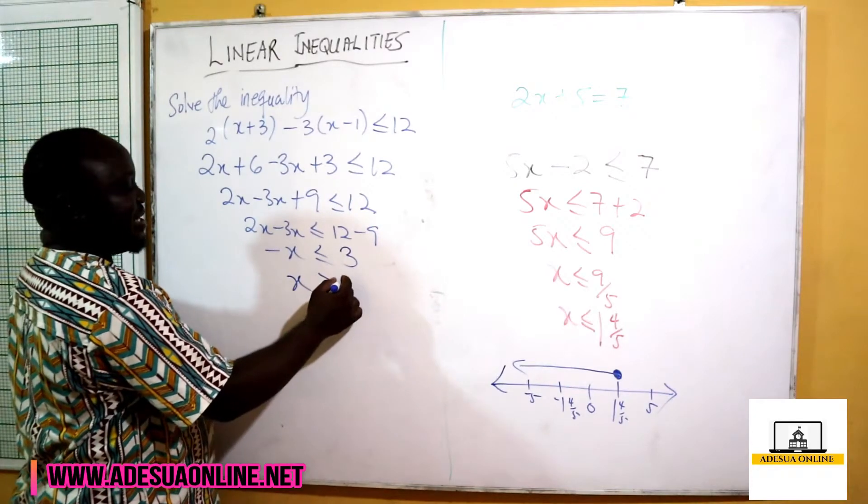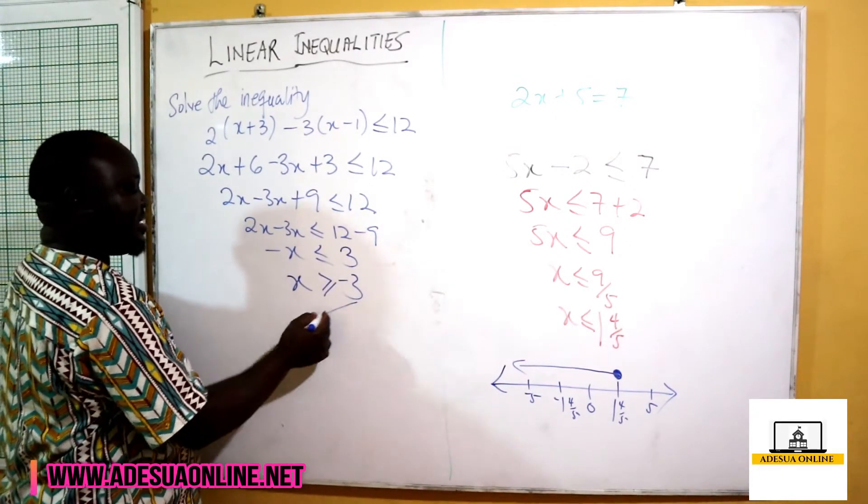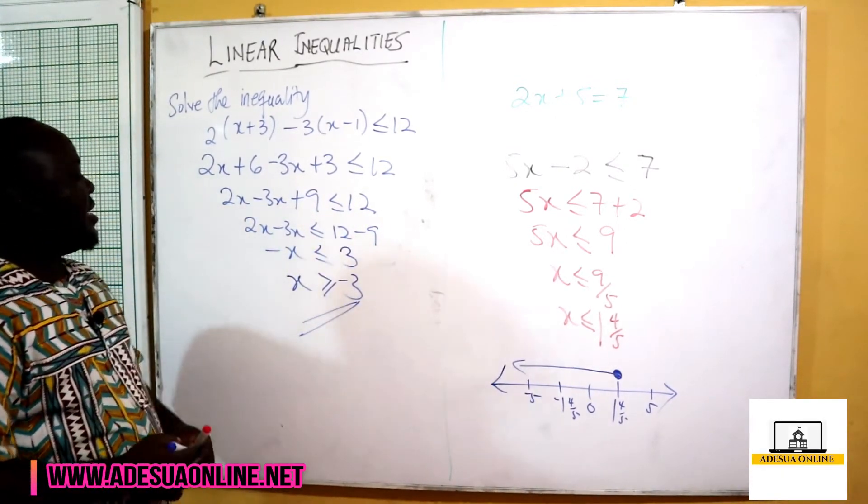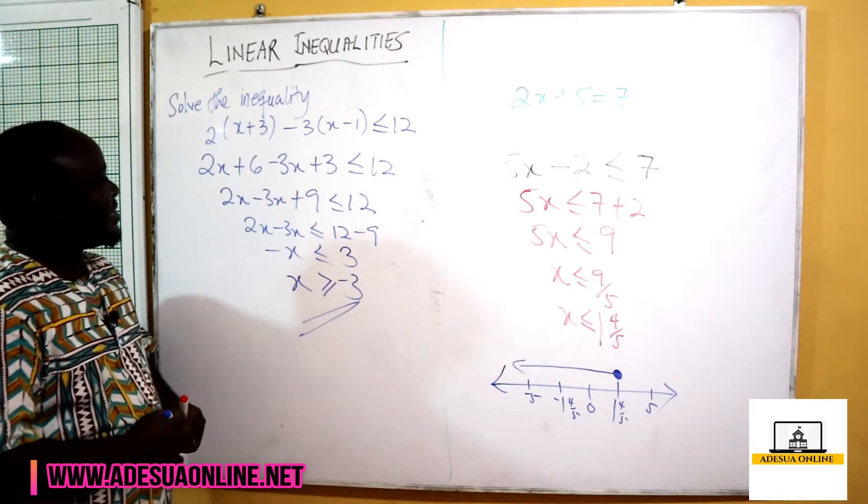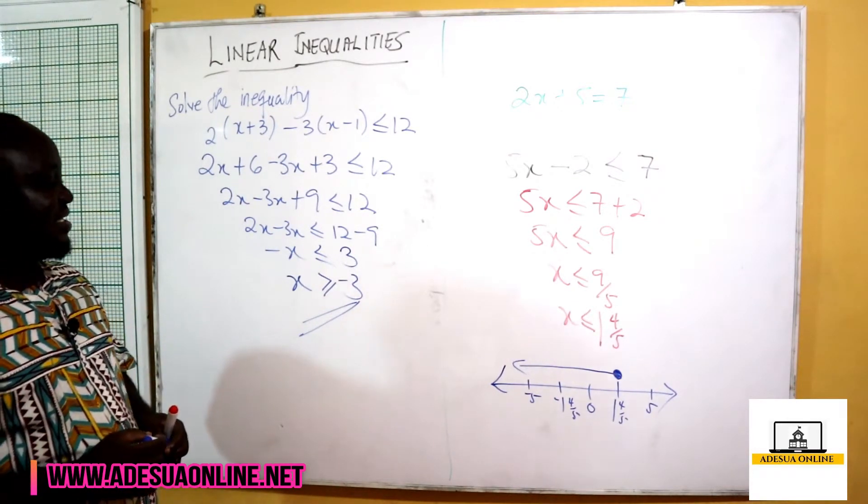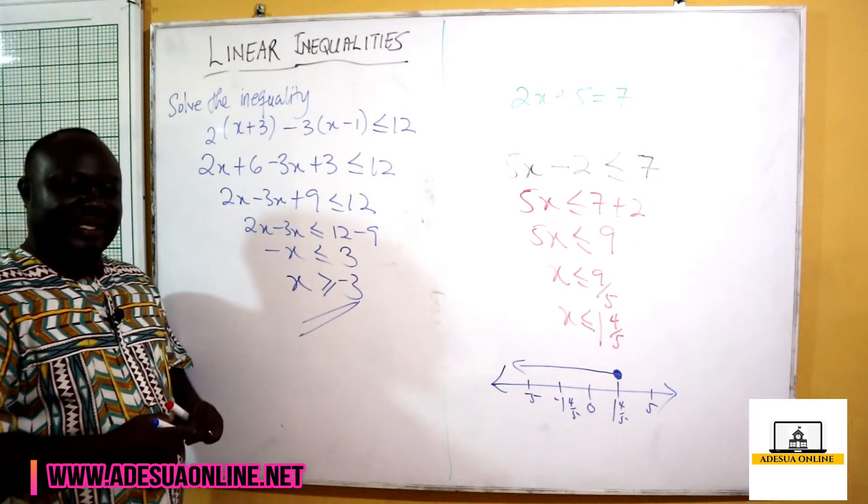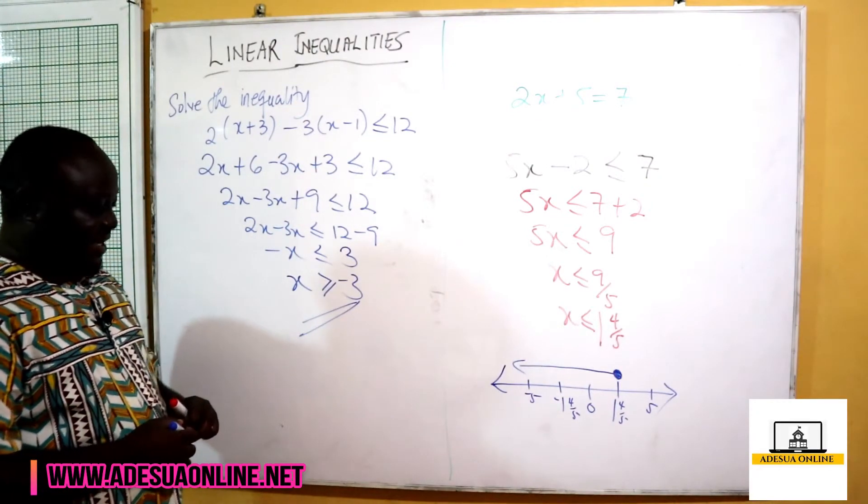So this becomes our solution for 2(x+3) - 3(x-1) ≤ 12. Our final answer is x is greater or equal to negative 3.